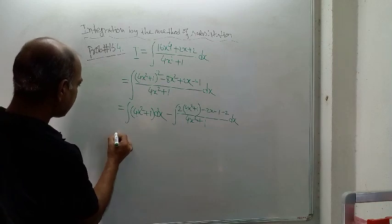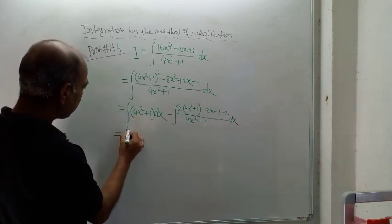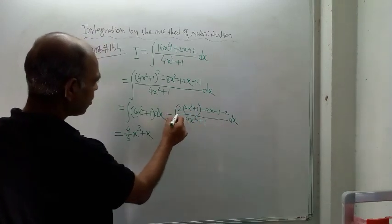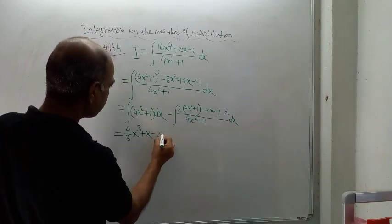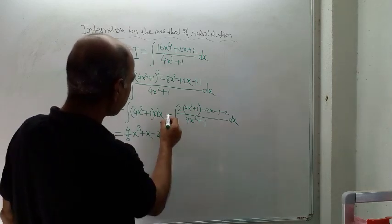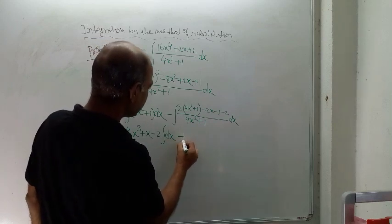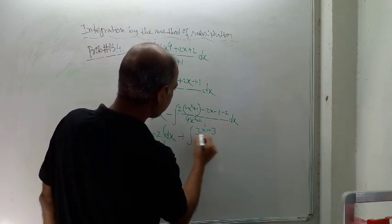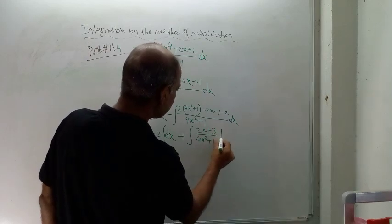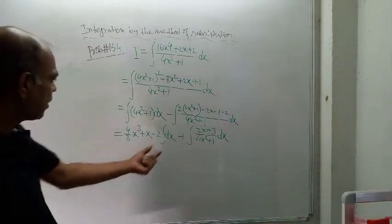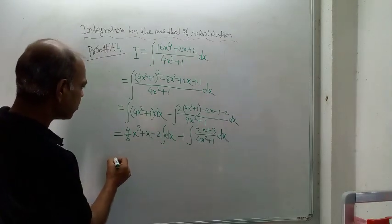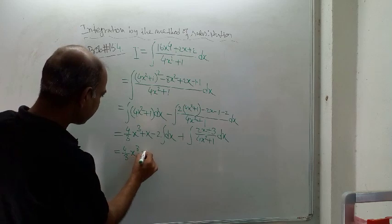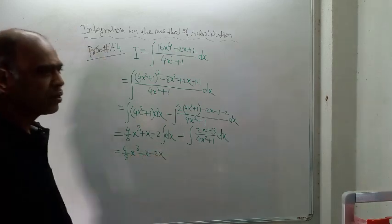So here the integration of the first term is 4/3 x³. For this term, plus x. Then you are getting minus 2 times the integration of dx. Here this minus sign and this minus sign make a plus sign. So this is equal to the integration of (2x + 3) divided by (4x² + 1) dx. The integration of this gives minus 2x. So: 4/3 x³ + x minus 2x.